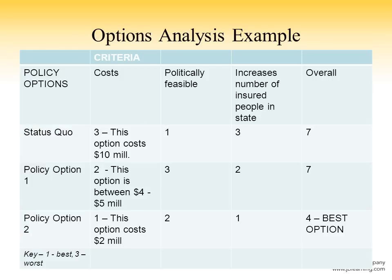The point of this table is that if you're developing a policy analysis for a particular client, they could easily look at it and quickly get a sense of what's best and why. A client who cares most about political feasibility can look at that column and see that the status quo ranks highest there. Or a client looking for the lowest-cost option might choose policy option two. Or a client looking at the overall best option — when you add up the various rankings — would see that policy option two has the lowest overall ranking and is therefore the best option.